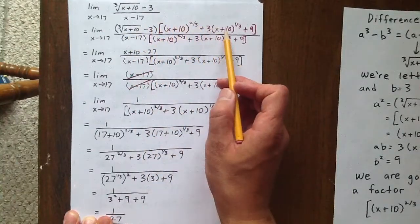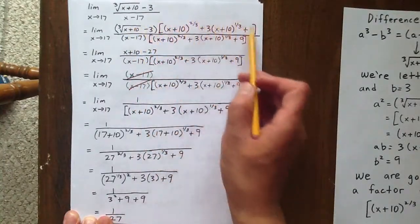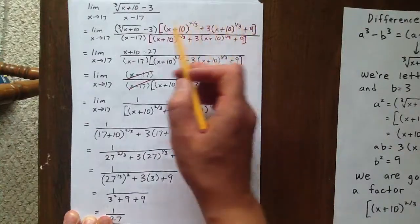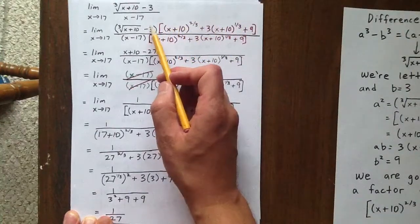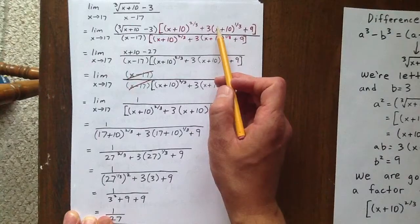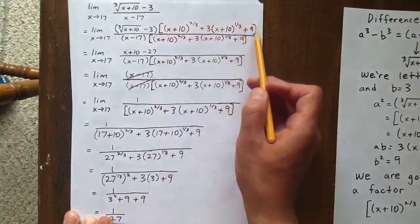We're going to have 3 times x plus 10 to the two-thirds plus 9 times x plus 10 to the one-third minus 3 times x plus 10 to the two-thirds minus 9 times x plus 10 to the one-third minus 27.